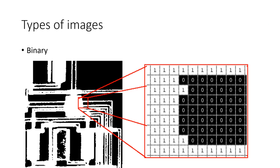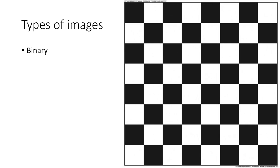Images generally are of four main types. The first is binary. As the name binary suggests, these images consist of only two values: black and white. The best example of a binary image is a conventional chessboard.